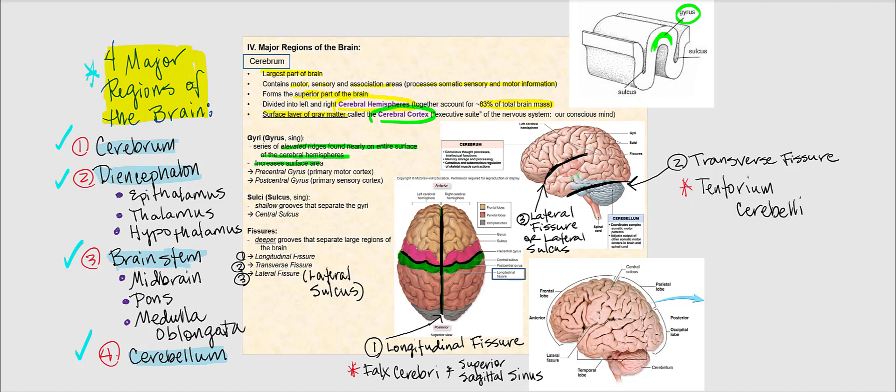There are two important gyri we'll be discussing: the precentral gyrus and the postcentral gyrus. Another structure is referred to as a sulcus, which is a shallow groove that separates these gyri. If we're looking at more than one of these shallow grooves, then we refer to them as sulci.